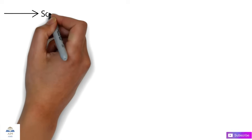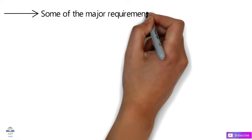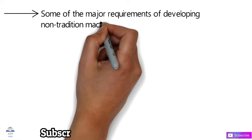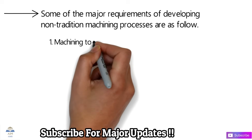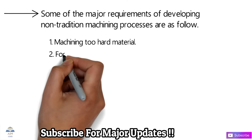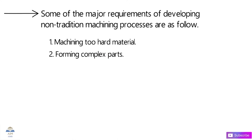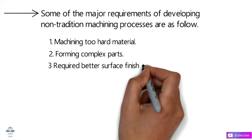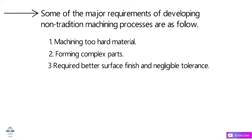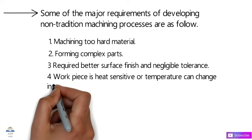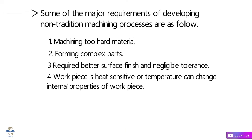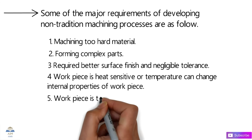All these disadvantages can be eliminated using non-conventional machining. The major requirements for developing non-traditional machining include: machining very hard materials, forming complex geometrical parts, achieving better surface finish and negligible tolerance, machining heat-resistive workpieces that would change internal properties under heat, and machining workpieces that are too slender and flexible to clamp.